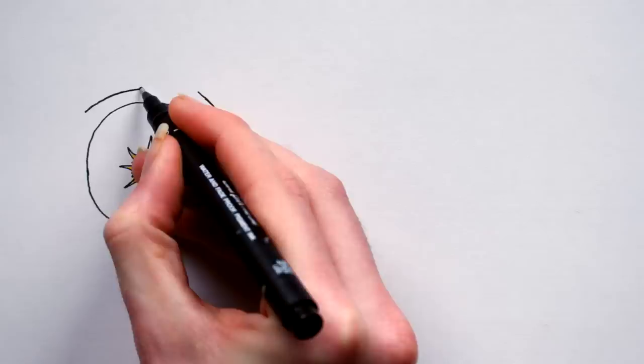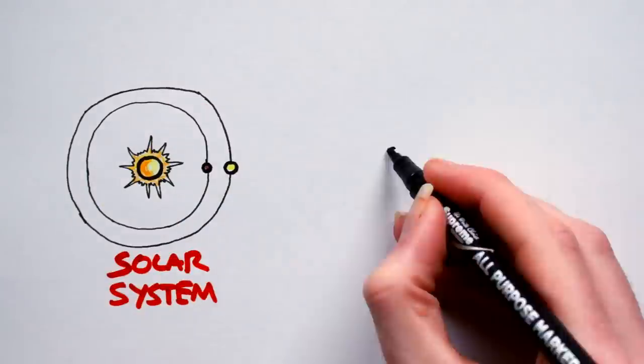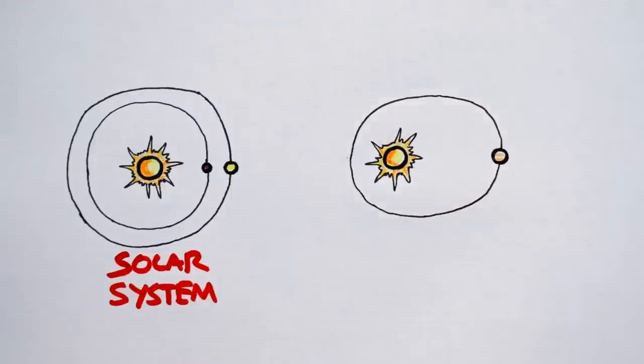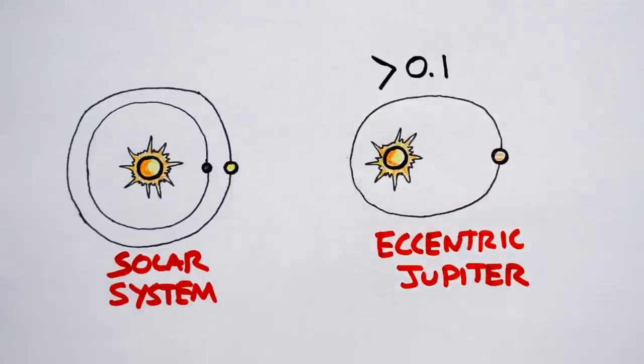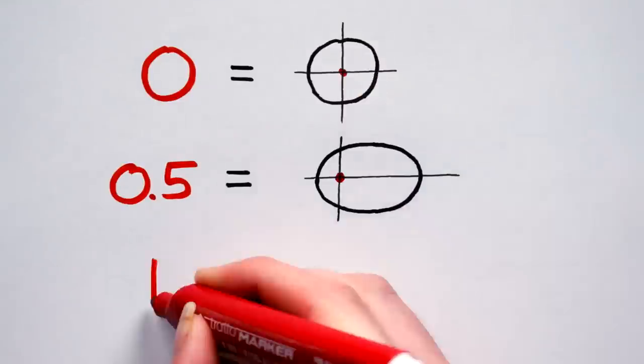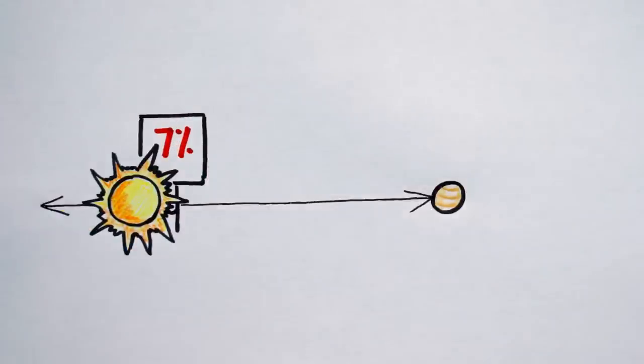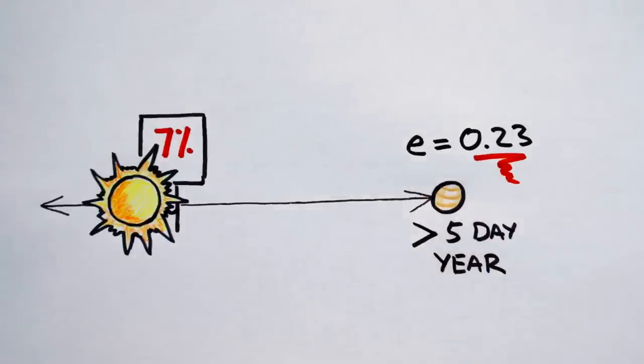All planets in our solar system orbit on nearly circular orbits. A giant planet with an orbital eccentricity of 0.1 or greater is classed an eccentric Jupiter. Remember, zero is a perfect circle and one is a straight line. 7% of all stars have at least one eccentric Jupiter, and the average eccentricity of those with orbital periods greater than 5 days is roughly 0.23. To put that in context, Pluto has an orbital eccentricity of 0.24.